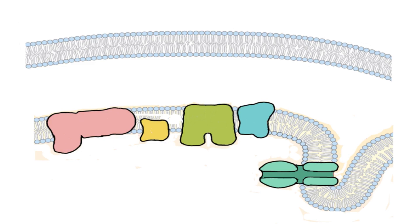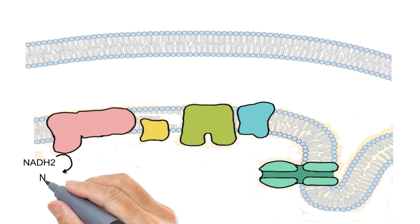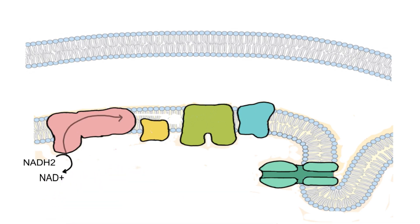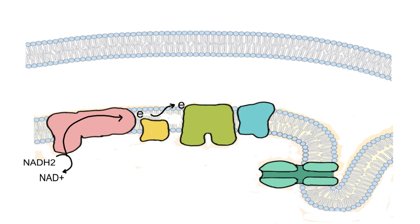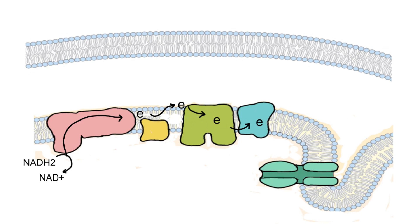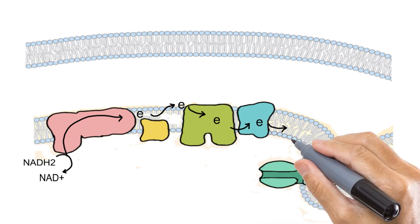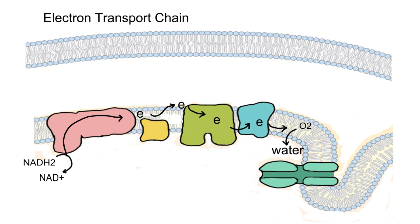In the inner membrane of mitochondria, electron carriers are present in a specific order. The first electron carrier takes electrons from NADH2 and converts it to NAD+, then transfers the electrons to the next carrier. Each successive carrier has higher electron affinity and pulls the electrons along. Finally, all electrons are transferred to oxygen, which accepts them and becomes water — also known as metabolic water. This chain of electron carriers is called the electron transport chain, or ETC.